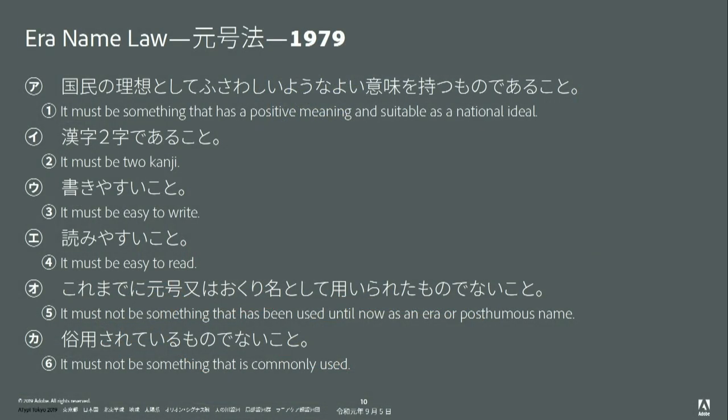There's actually a seventh criteria not in the Era Name Law — more of a constraint. There's a single Latin letter abbreviation for all era names. For example, Heisei is abbreviated as H because the first kanji's reading begins with H. This effectively means a new era name cannot begin with M for Meiji, T for Taisho, S for Showa, H for Heisei, and now R for Reiwa.